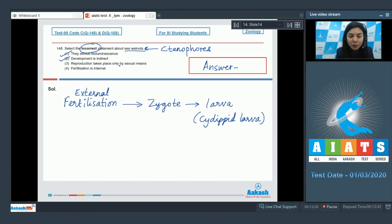Option three: reproduction takes place only by sexual means. Yes, this is true. Ctenophores or sea walnuts reproduce only by sexual means, and this also means that asexual mode of reproduction is absent in ctenophores. They cannot reproduce asexually. Option four: fertilization is internal. This would be incorrect because external fertilization is seen in ctenophores. Thus, option four is incorrect. The correct answer here is option number four.